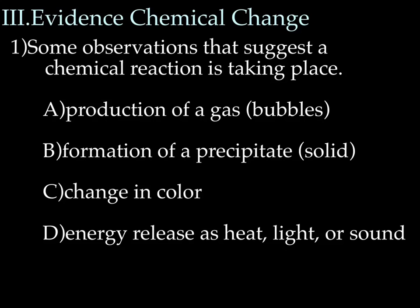Evidence for chemical change — here is a list of observations that suggest a chemical reaction is taking place, and you absolutely need to know this list, as it's stuff you will observe throughout the year in our labs. First, the production of a gas, seen as bubbles. Second, the formation of a precipitate — that is when you take two liquids and you get a solid that forms. That solid doesn't necessarily need to be a big rock; it can be powdery, and you'll be seeing a lot of that.